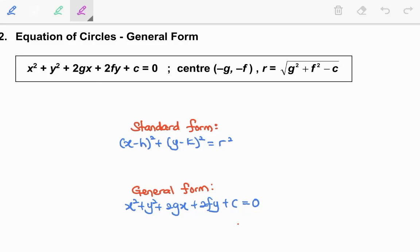In this video, we are going to learn about the general form of equation of a circle. The general form of a circle is x squared plus y squared plus 2gx plus 2fy plus c equal to 0.